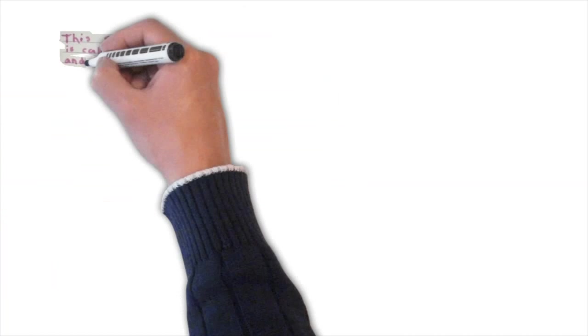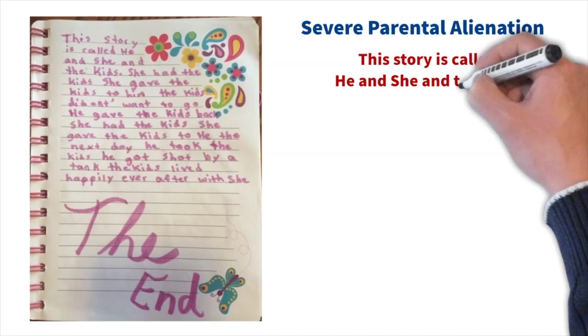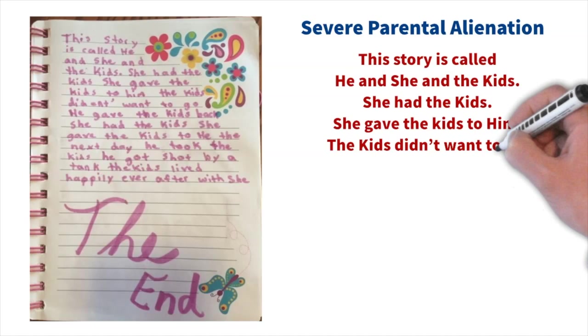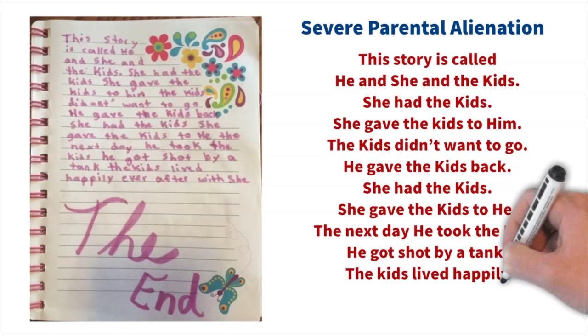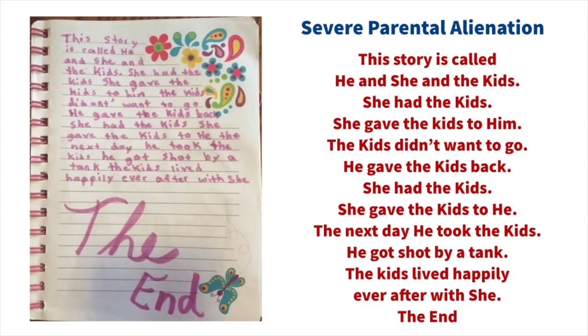And then the alienation turns to severe. This story is called he and she and the kids. She had the kids. She gave the kids to him. The kids didn't want to go. He gave the kids back. She had the kids. She gave the kids to he. The next day he took the kids. He got shot by a tank. The kids lived happily ever after with she. The end.